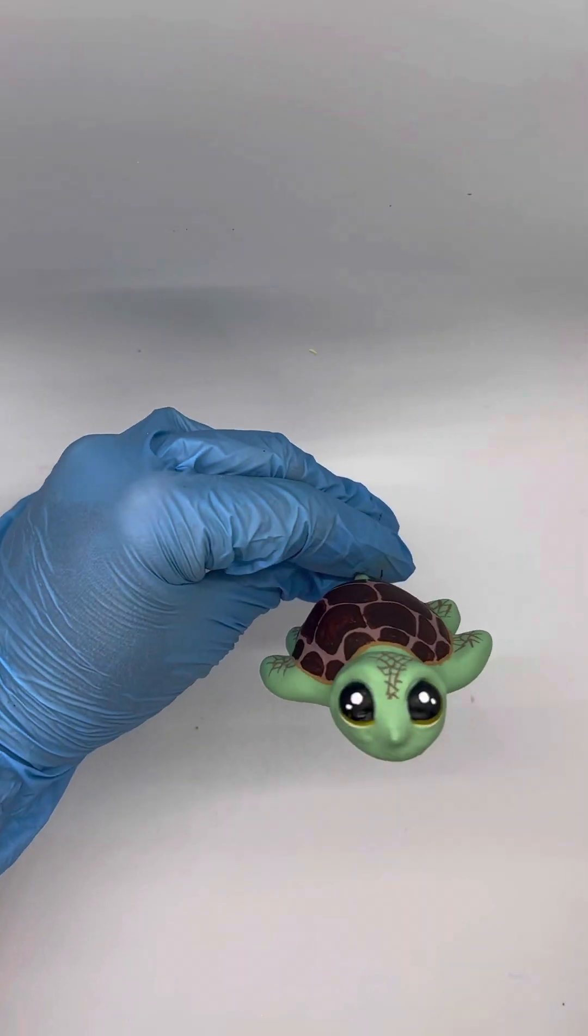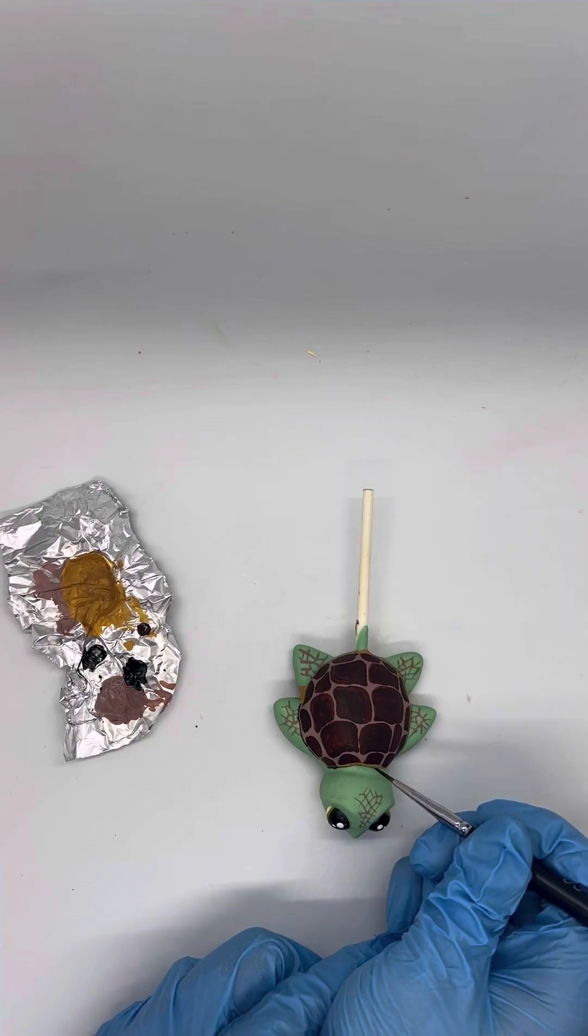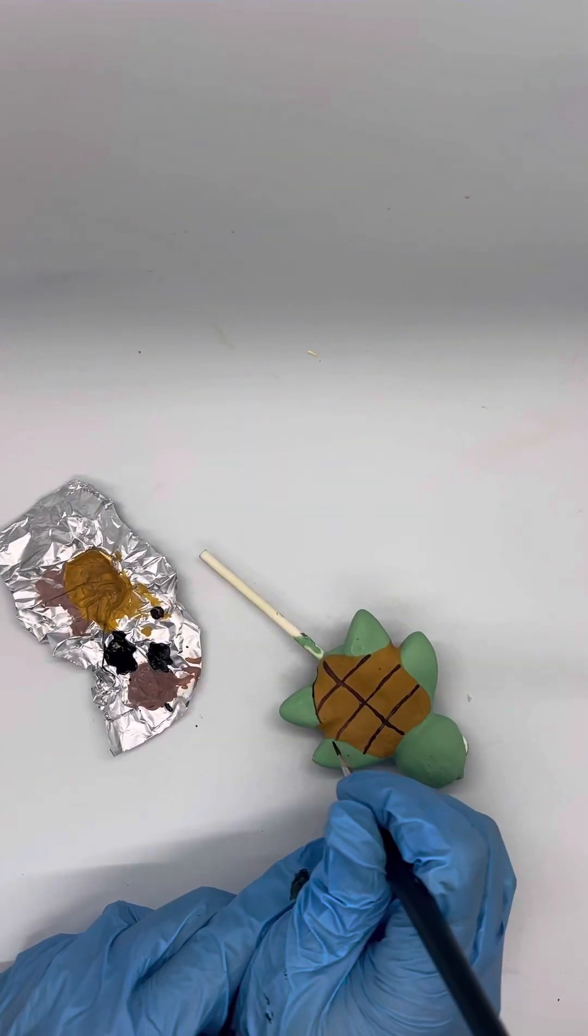This next step is probably unnecessary, but I like to add a lot of detail. I just take black paint, and I just outline the bottom of the shell and the bottom of the turtle.